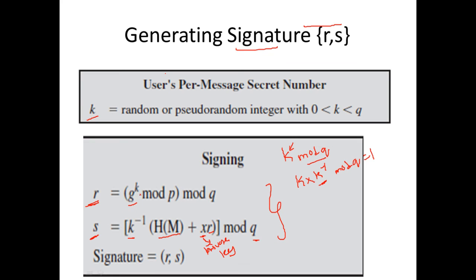To recap: R = G^K mod P mod Q, where G, P, Q come from global public key components and K is a random integer between 0 and Q. S = K_inverse · (H(M) + X·R) mod Q, where K_inverse is the modular multiplicative inverse of K mod Q, H(M) is the SHA message digest, and X is the sender's private key. Once the signature is ready, the plaintext message M is concatenated with the signature and sent to the receiver.